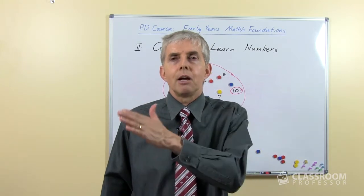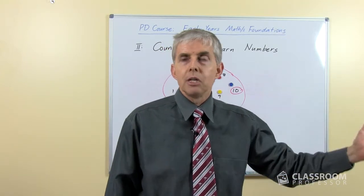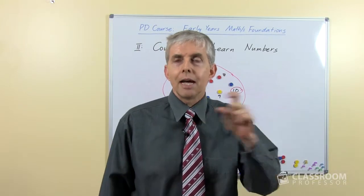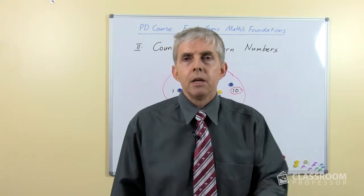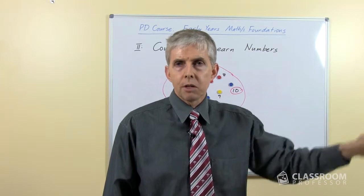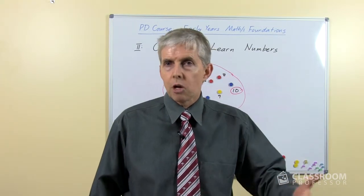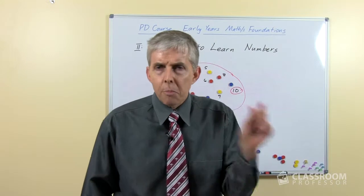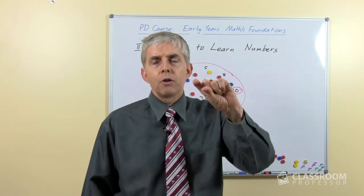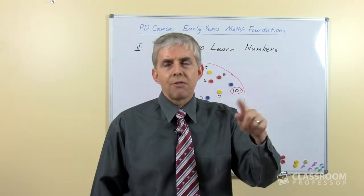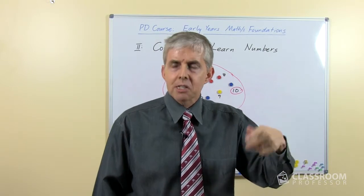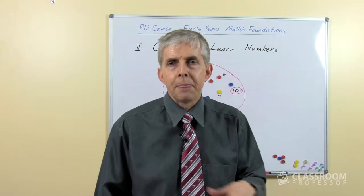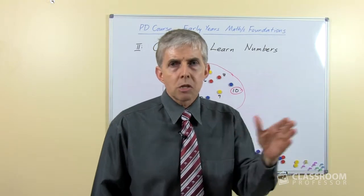Just as being able to recite A, B, C, D, E, F, G, H is a rote learned sequence of names and nothing more, knowing 1, 2, 3, 4, 5, 6, 7 up to 20 is the same thing. There's a little bit of a pattern in the teen numbers — 14, 16, 17, 18 — those have some pattern, but it's mostly rote learned.